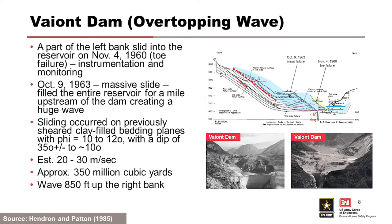A part of the left bank slid into the reservoir on November 4, 1960. It was a toe failure that instrumentation and monitoring indicated. In October 1963, a massive slide occurred, filling the entire reservoir for a mile upstream of the dam, creating a huge wave. The sliding occurred on a previously sheared clay-filled bedding plane with a friction angle of 10 to 20 degrees with a dip of 35 plus or minus 10 degrees. It was estimated the slide occurred at about 20 to 30 meters per second and was accelerating. Approximately 350 million cubic yards of material were displaced, creating an 850-foot wave up the right bank.